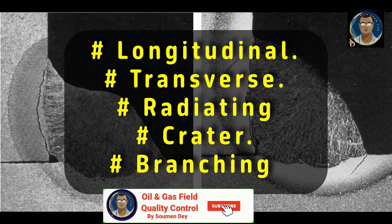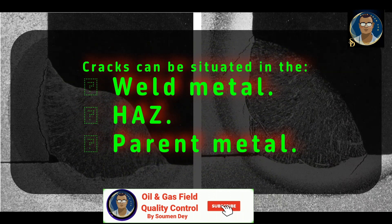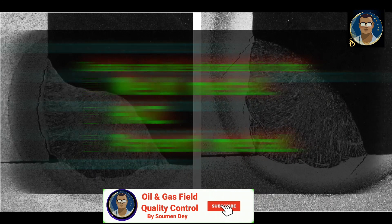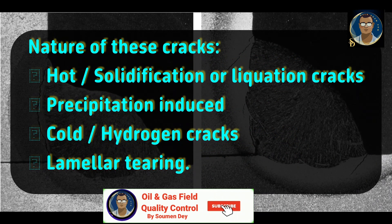Types of cracks include: longitudinal, transverse, cracks radiating from a common point, crater cracks, branching or connected cracks originating from a common crack. Cracks can be situated in the weld metal, in the heat affected zone, or in the parent metal — except crater cracks, which are found only in the weld metal. Depending on their nature, cracks can be hot cracks (solidification or liquation), precipitation-induced cracks (reheat cracks in creep-resistant steel), cold cracks (hydrogen induced, also termed delayed cracks), and lamellar tearing.